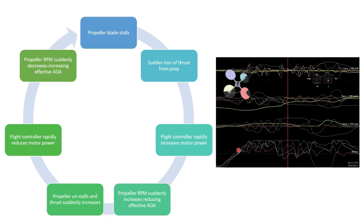If you look at a blackbox log in a prop wash situation, you can see the flight controller increasing power to the motor, then decreasing power, then increasing again, then decreasing again, going round and round this loop. And it's that loop that's creating the oscillation you get in prop wash.